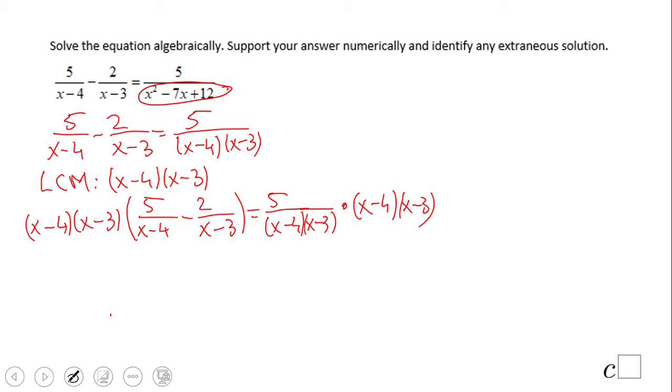Good. Now here we're going to use distributive property and we're going to have x minus 4 times x minus 3 times 5 over x minus 4, minus, again distributive property, x minus 4 times x minus 3 times 2 over x minus 3.